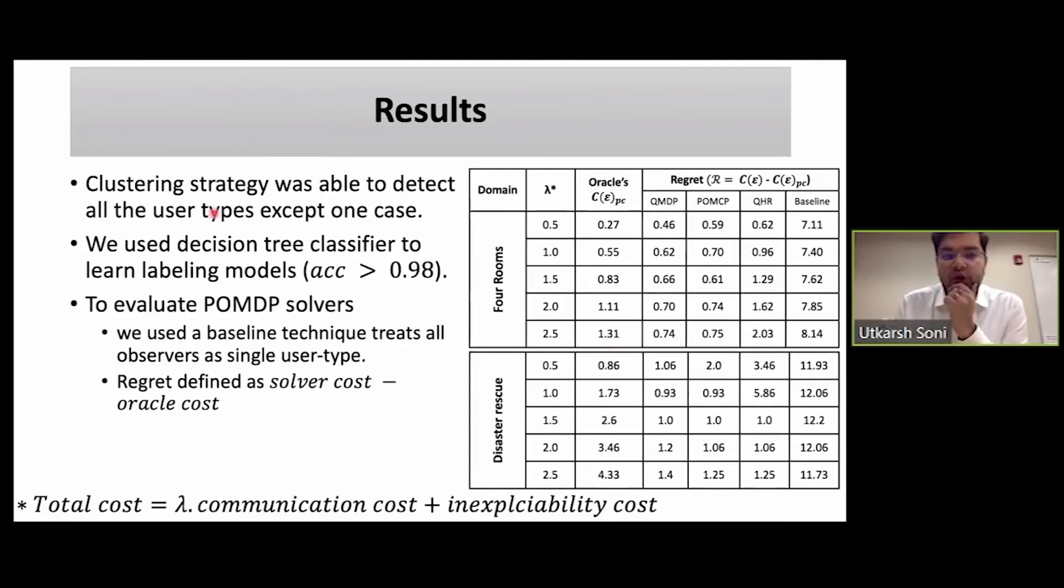For the results, we saw that our clustering strategy was indeed able to perfectly separate observers from the user type and it was able to perfectly get all the user types for all cases except for one case, which turned out to be okay. Because in that particular case, the models that were assigned to the two user types that were clubbed together were such that they, in fact, did not require any explanation because they came up with the same plan as the robot would. Then we trained a decision tree classifier to learn the labeling model of all the detected types, and their accuracy came out to be quite high.